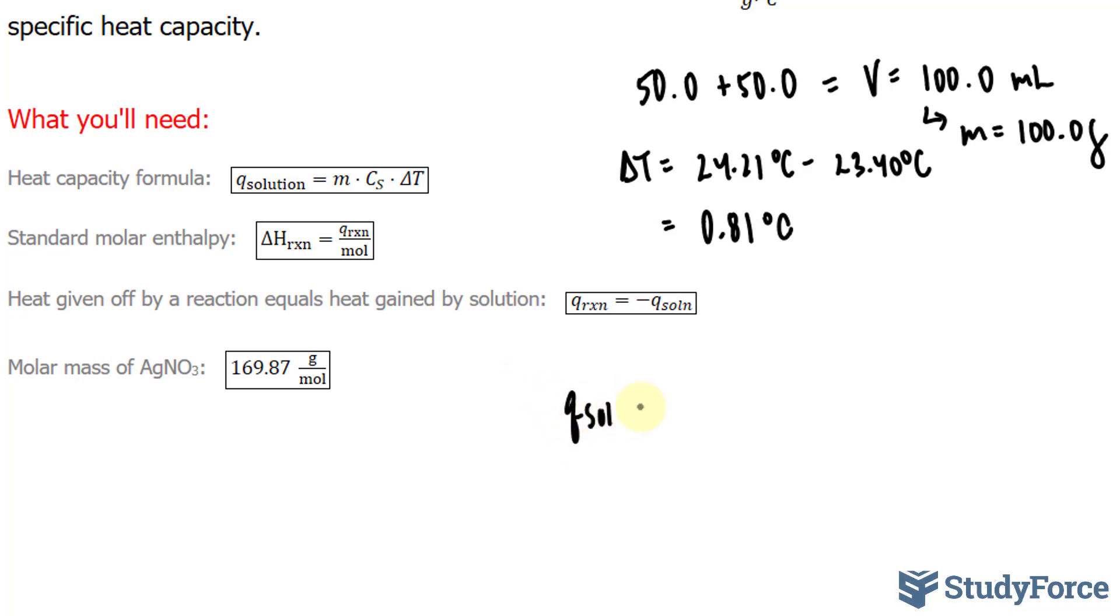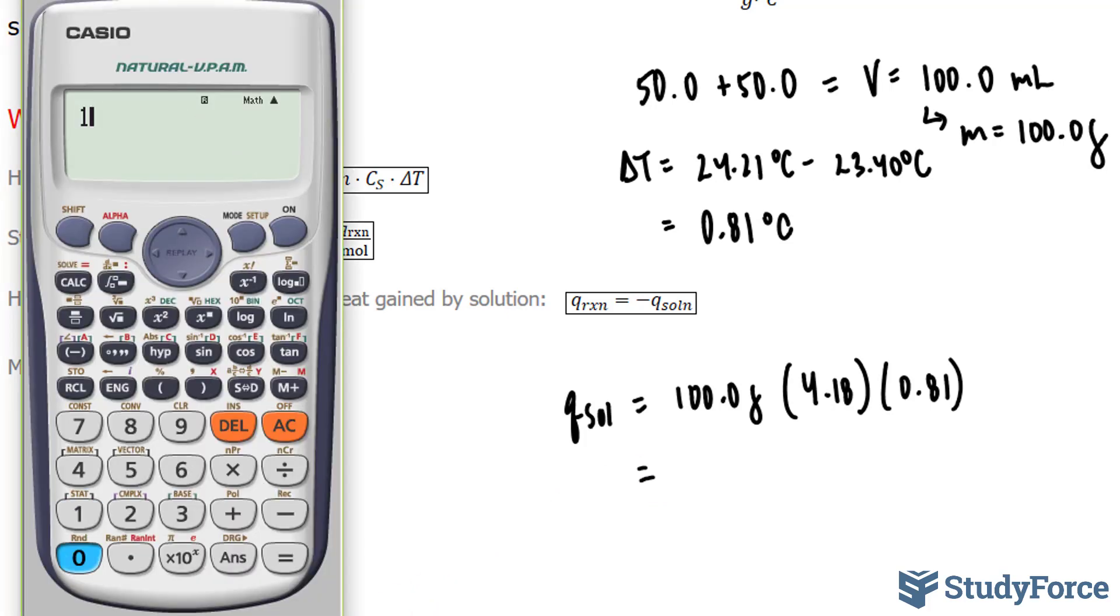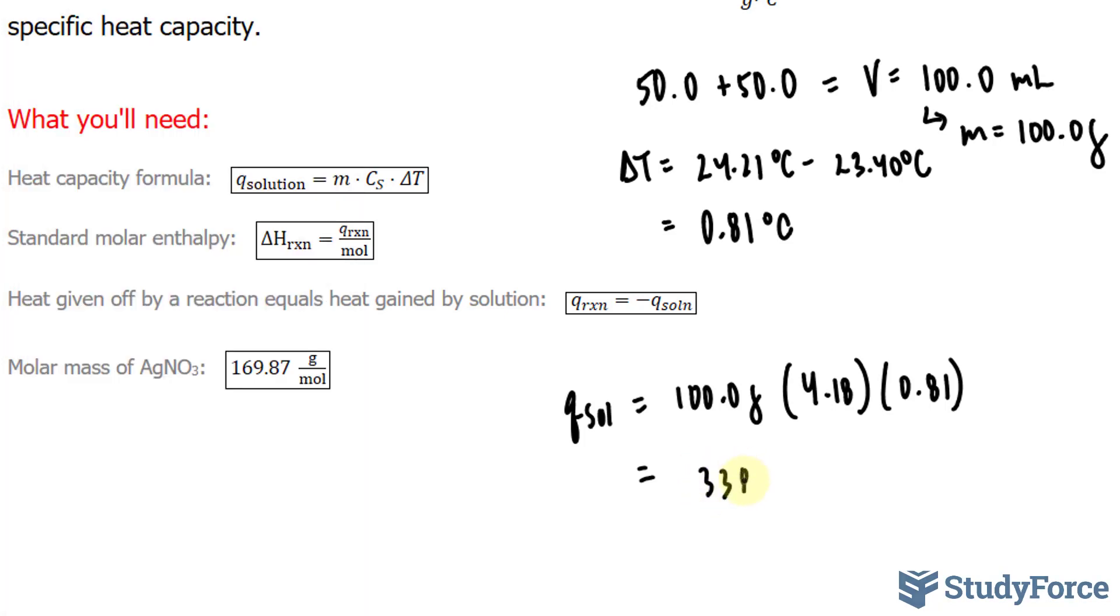The heat of the solution equals the mass of 100.0 grams times 4.18, which was given in the question, times 0.81. Using our calculator, 100.0 times 4.18 times 0.81, we should end up with a number that has two significant figures. I'll write as many digits as I can to prevent rounding errors: 338.58 joules. This is positive as expected.